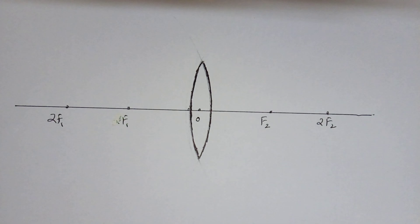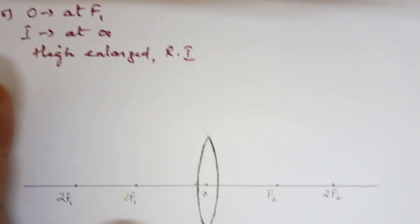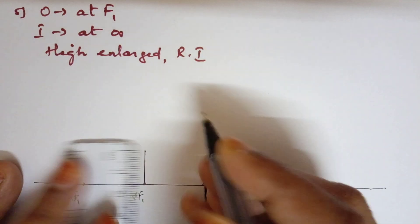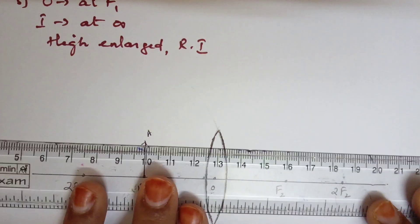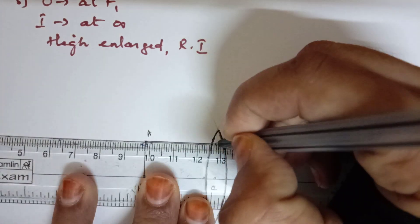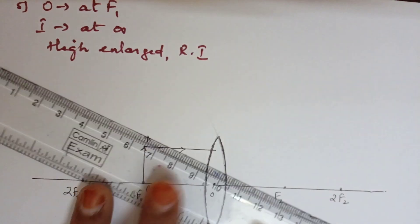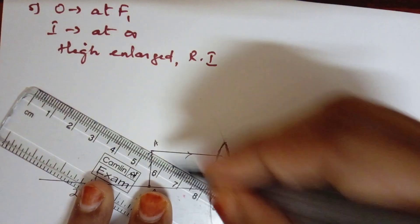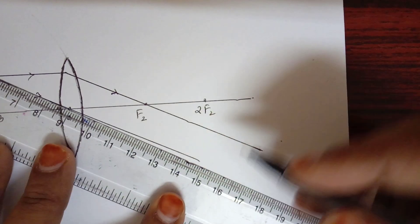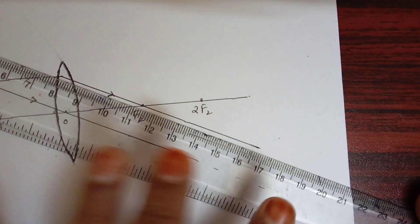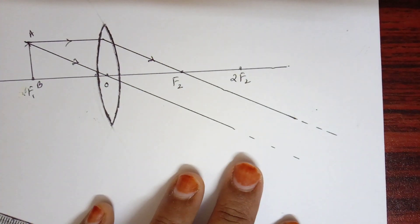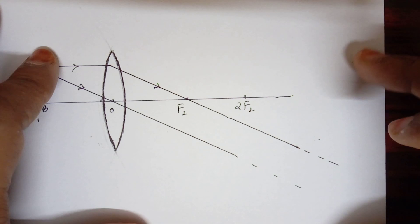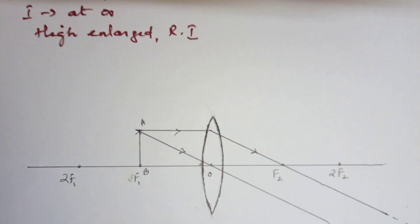The last two cases are quite easy. For the fifth case, when the object is exactly at F1, I draw object AB at F1. One ray runs parallel to the principal axis and passes through F2. The second ray passes through the optic center. These two refracted rays are not parallel — they are slightly bent — meaning they will meet somewhere at infinity. So the image is highly enlarged, real, inverted, but at infinity.